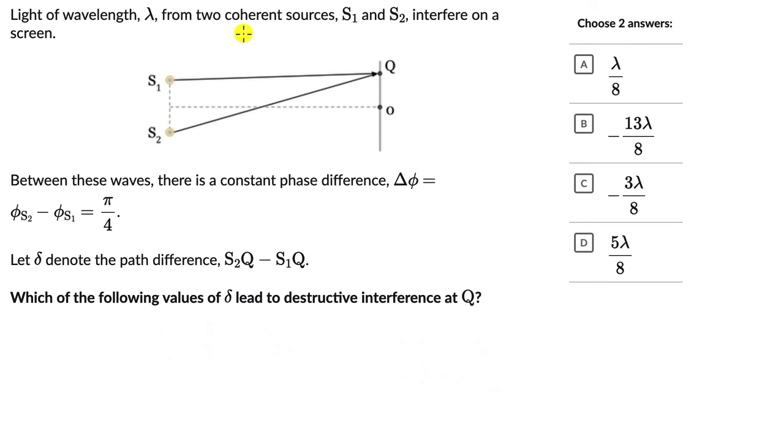Light of wavelength λ from two coherent sources, S1 and S2, interfere on a screen. We can see that over here. Between these waves, there is a constant phase difference, Δφ, which is π/4.